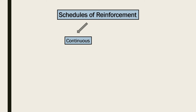Continuous reinforcement involves delivering a reinforcement every time a response occurs. Learning tends to occur relatively quickly, yet the response rate is quite low, and extinction also occurs very quickly once reinforcement is halted.